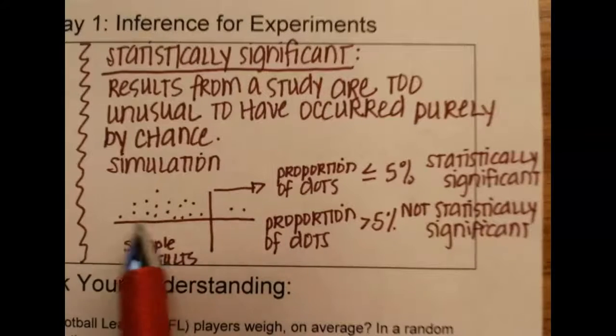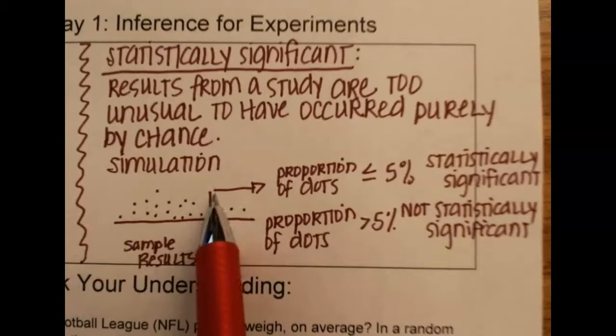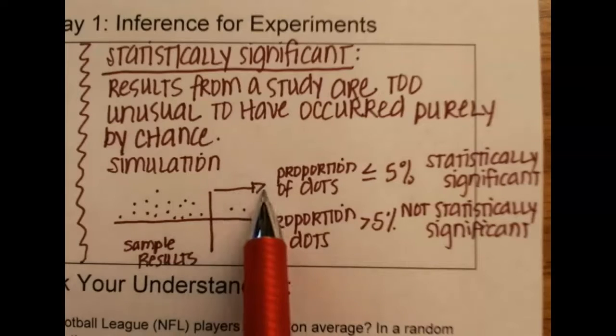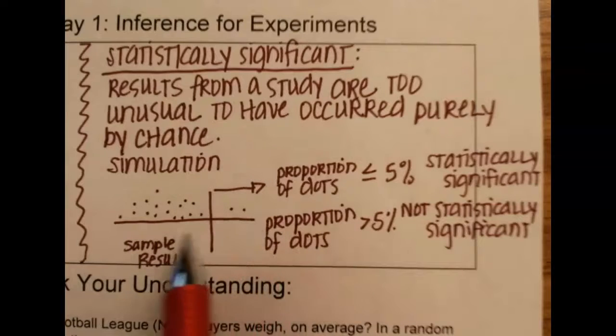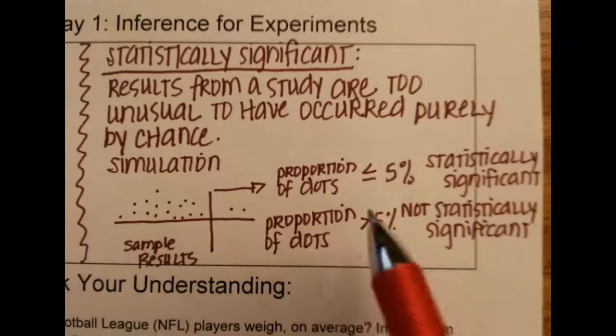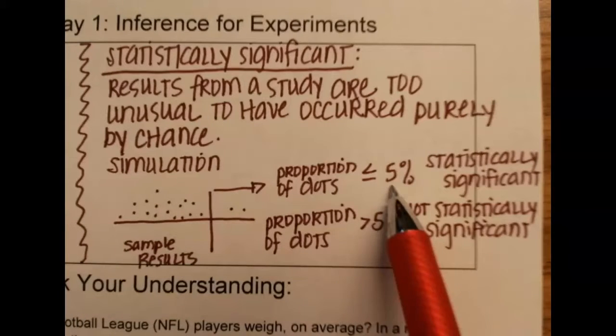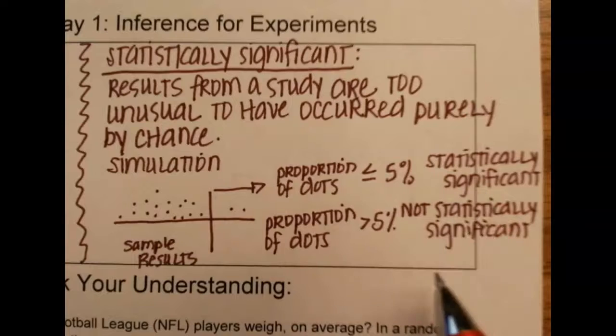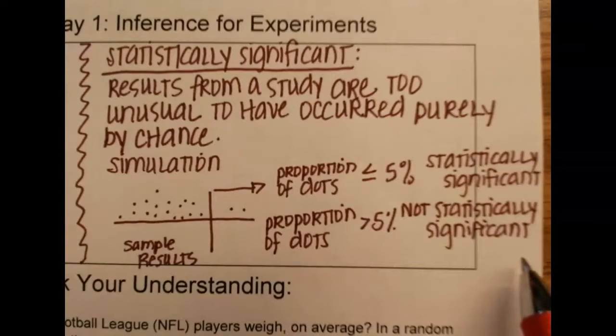Okay, so this was kind of like a summary of what we did. We had a value, and you want to know from that value or more extreme, how many of the numbers occurred there. If we had been asking about a value on this side, we would have gone the other way. And so remember, less than 5% is statistically significant, greater than 5% is not statistically significant.